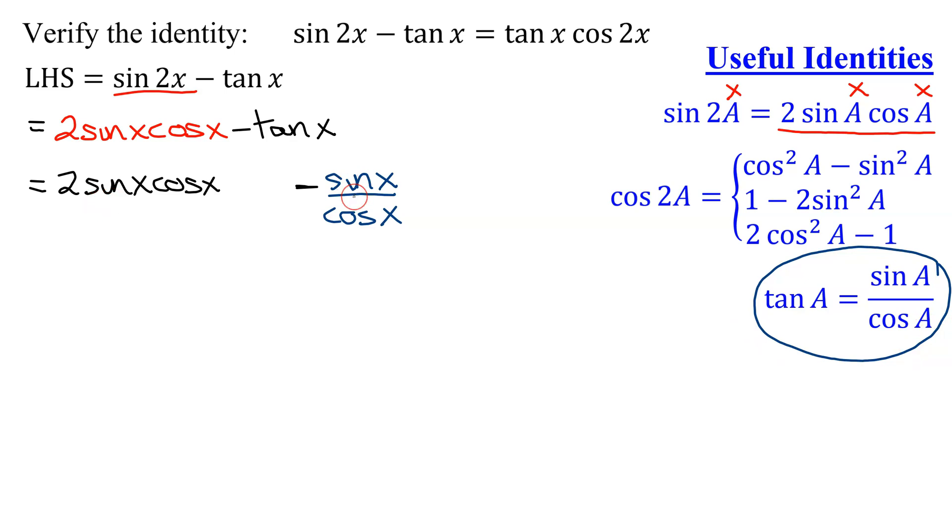Now to subtract these two terms, I'm going to need a least common denominator. And since there's only one denominator, that's my LCD, so it's just the cosine of x. So my first term, I turn into a fraction by dividing it by 1.